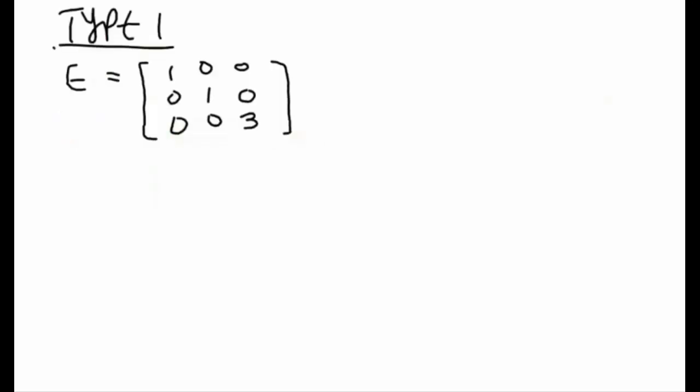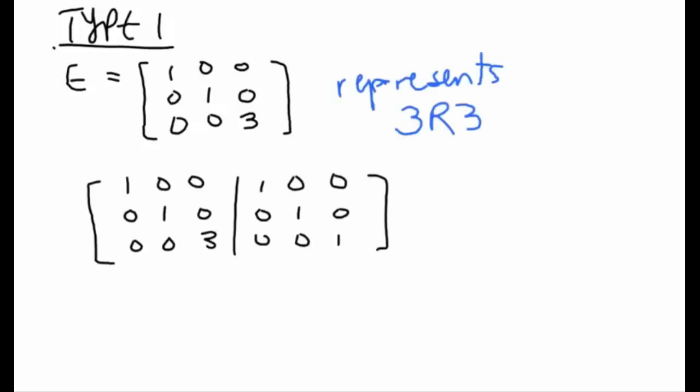Let's first take a look at type 1 elementary matrices and try to find their inverses and see if we can notice any patterns. So I want you to take a look at this elementary matrix E and see if you can figure out what elementary row operation it represents.